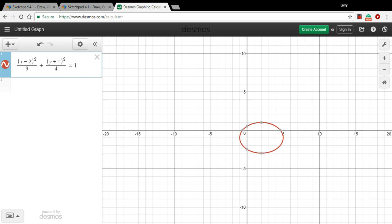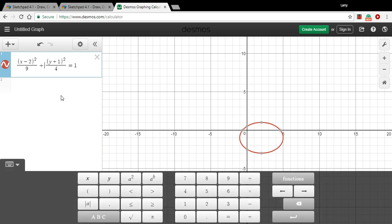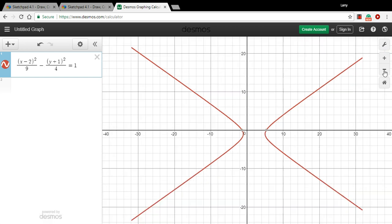So that's the standard form for an ellipse. The standard form for a hyperbola has just one difference. Instead of adding the x-term and the y-term, we're subtracting them. So if I just replace this plus with a minus, we get this hyperbola. And if you subtract the y-term from the x-term, you're going to have this kind of hyperbola that opens these big arms to the left and the right.